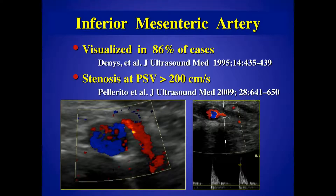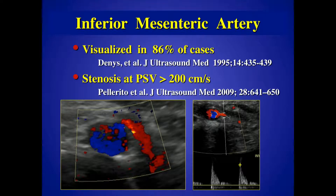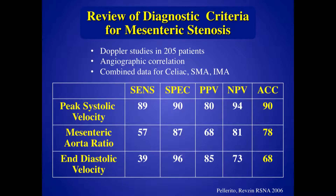I did some work looking at the IMA because I felt it was neglected, and yet you can see the IMA — it's not hard to find if you look for it. The way you find the IMA is by going in a transverse plane down from the celiac and the SMA, then you see the renals coming off, and if you continue down inferiorly, you'll see the IMA coming off to the left. If there's significant mesenteric disease, the IMA is hypertrophied and even easier to see. We came up with a velocity cutoff of 200 centimeters per second.